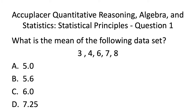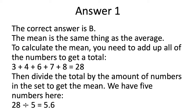Here is Acuplacer QAS Statistics Practice Test Question 1. The correct answer is B. The mean is the same thing as the average. To calculate the mean, you need to add up all of the numbers to get a total — here our total is 28. Then divide the total by the amount of numbers in the set to get the mean. We have 5 numbers here, so 28 divided by 5 equals 5.6, which is our mean.